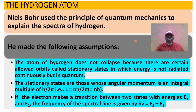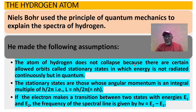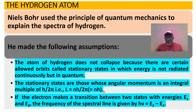Of course, you have in mind that this is part of an improvement on what you did at 100 level. This is a little more advanced. So please bear in mind and remember your electronic configurations. Niels Bohr used the principles of quantum mechanics to explain the spectra of hydrogen and made the following assumptions. The atom of hydrogen does not collapse because there are certain allowed orbits called stationary states in which energy is not radiated continuously but in quanta. The stationary states are those whose angular momentum is an integral multiple of h over 2π — that is, L = nh/2π = nħ, where n is the principal quantum number.